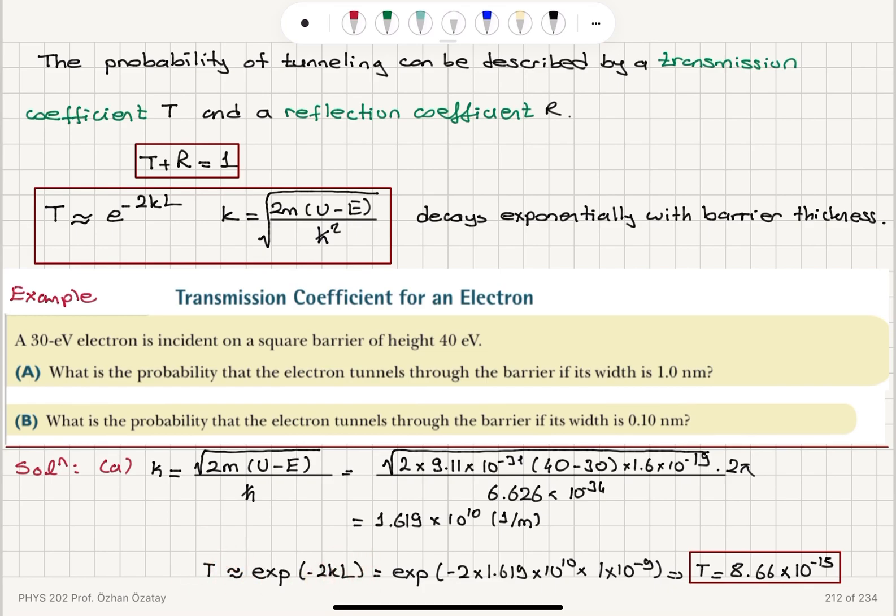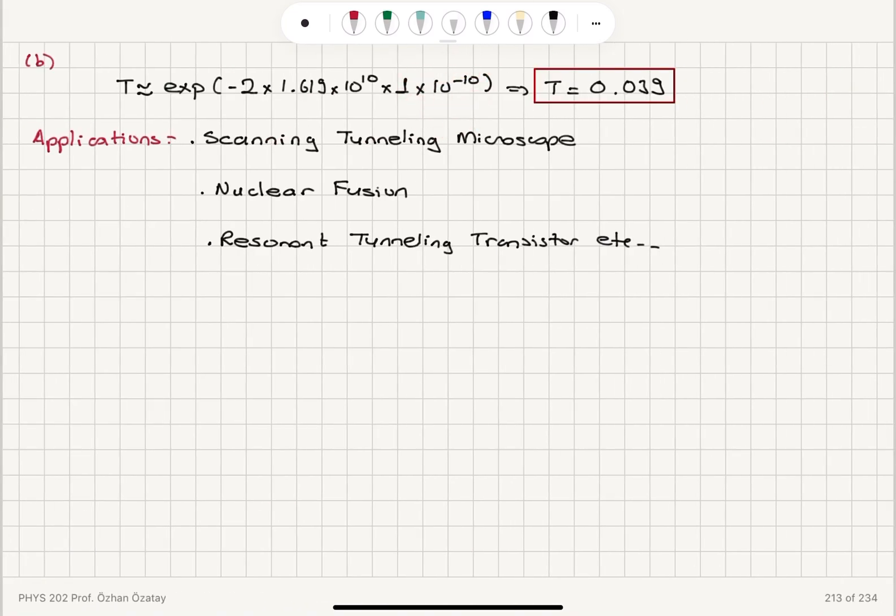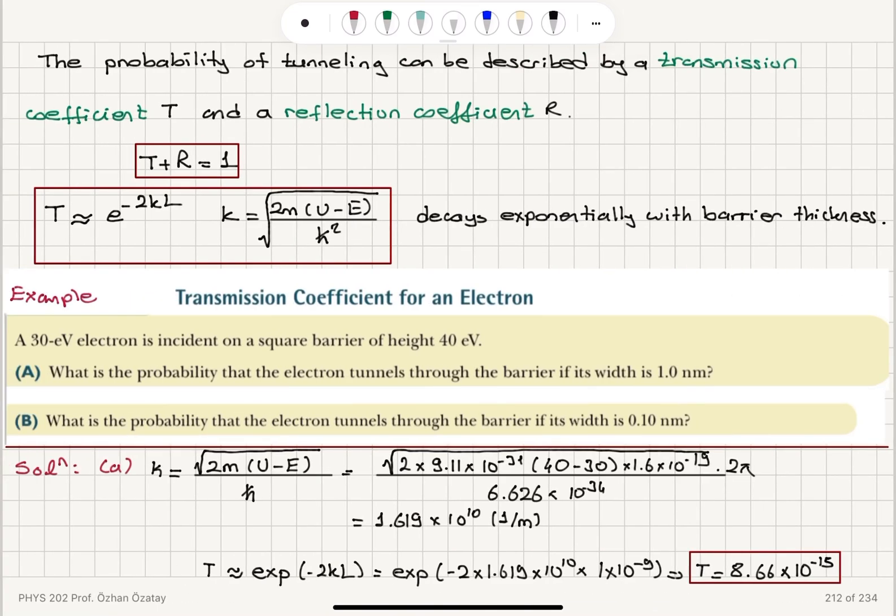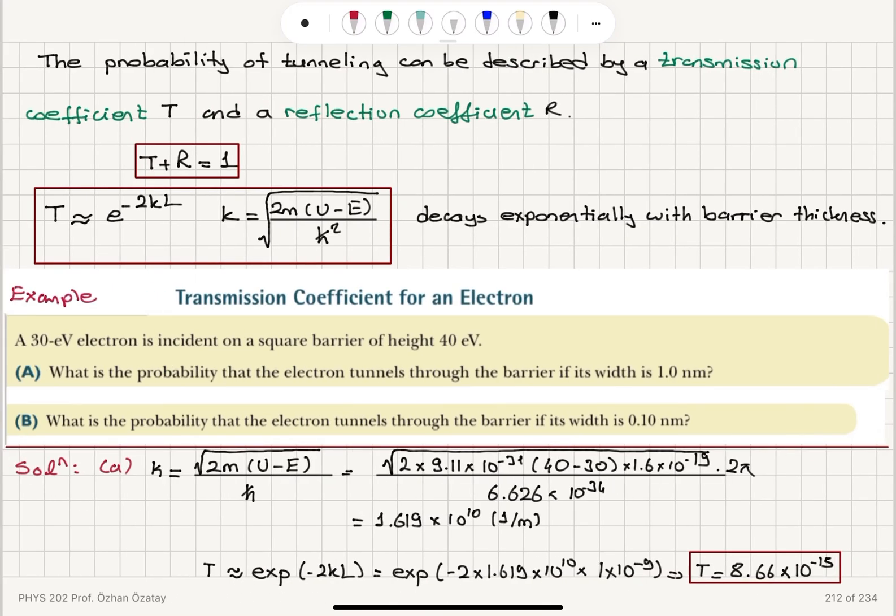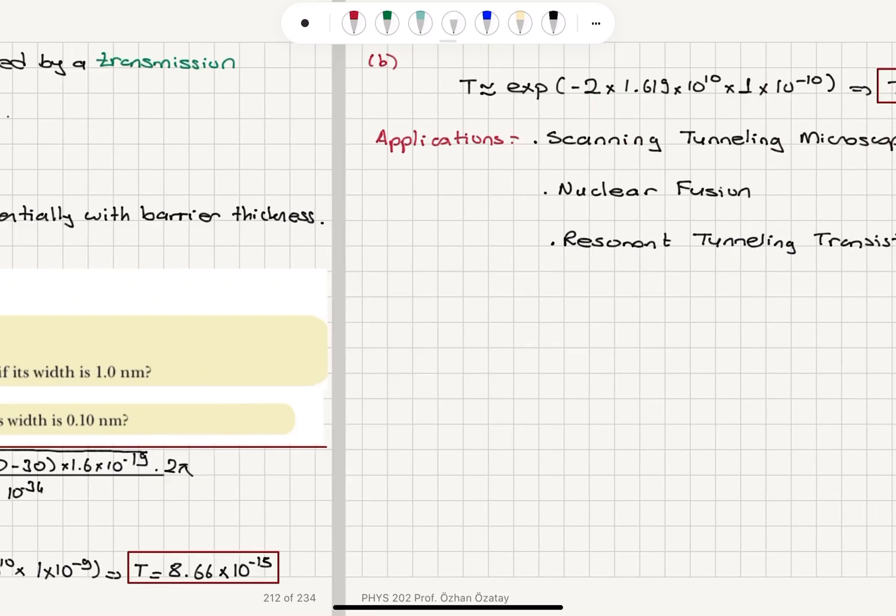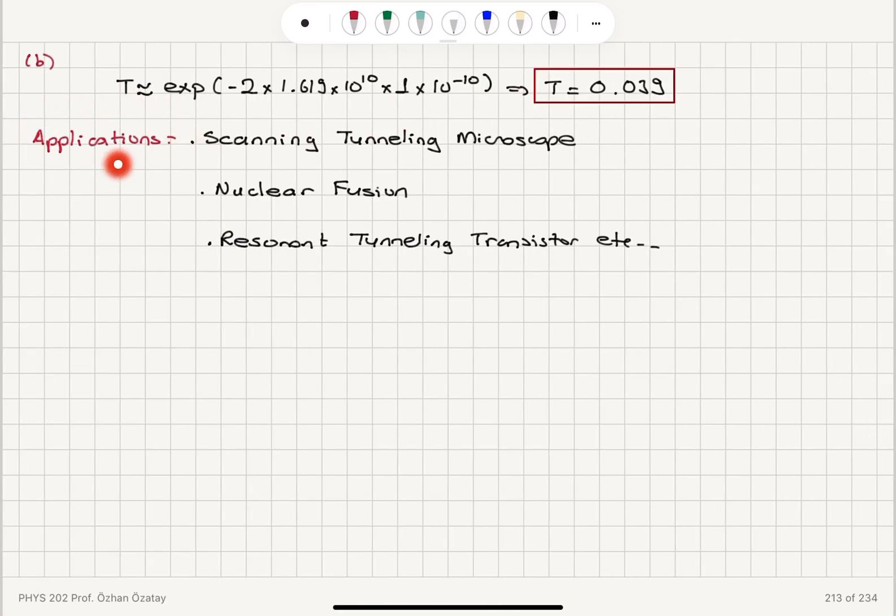We found that the transmission coefficient increases from 10 to the minus 14 to 0.039, a very significant increase by decreasing the barrier width by a factor of 10. Finally, I discussed applications of the tunneling process. It's widely used in scanning tunneling microscopes, nuclear fusion, and electronic devices like resonant tunneling transistors.